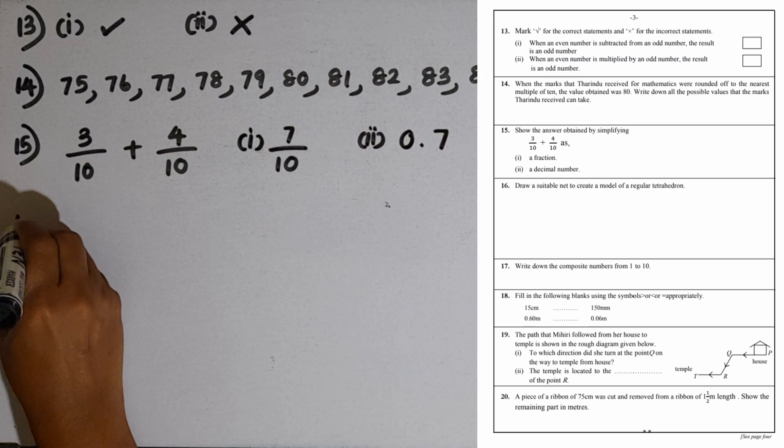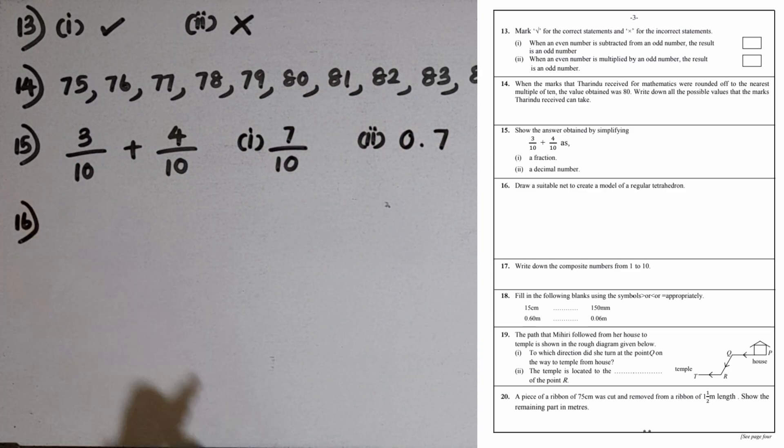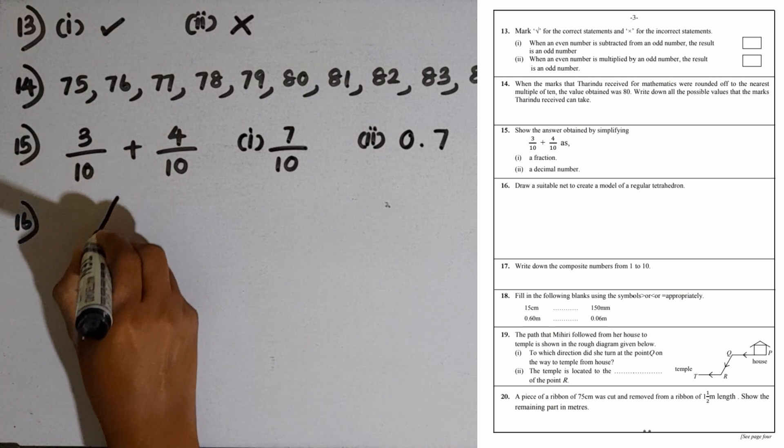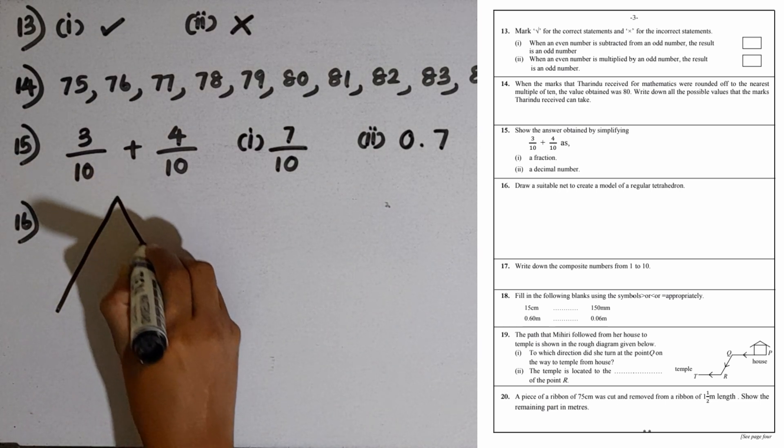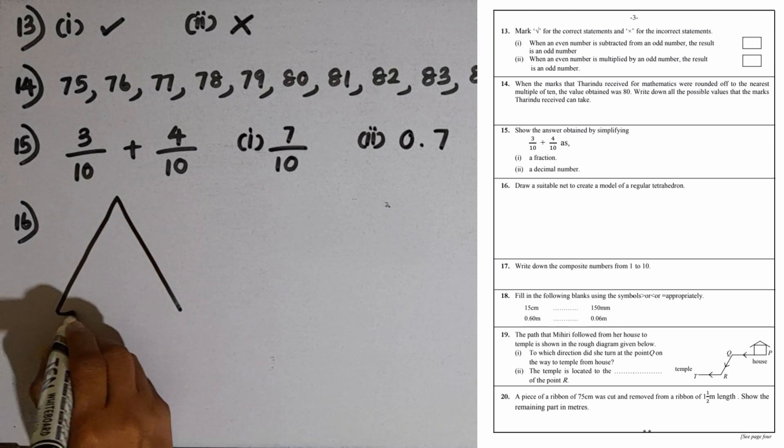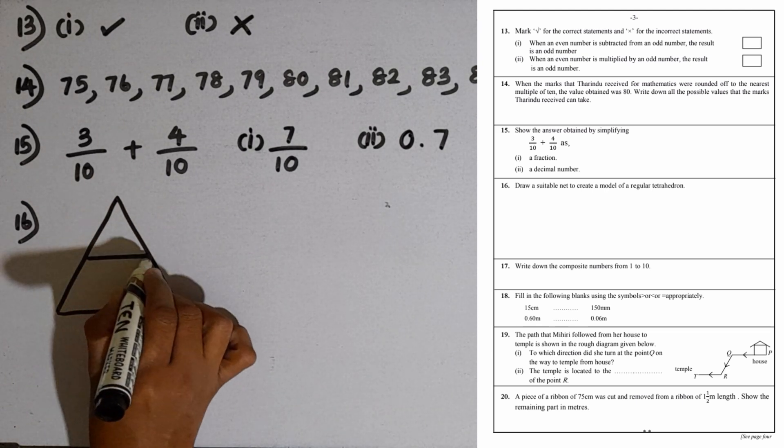Question number 16: Draw a suitable net to create a model of a regular tetrahedron. To create a regular tetrahedron, we can use this net. All these are equilateral triangles.